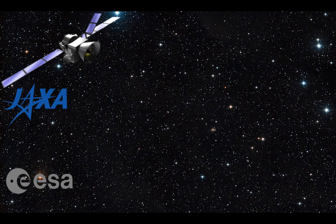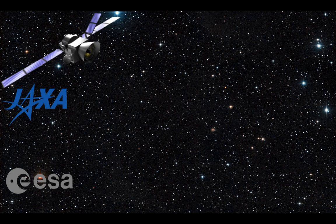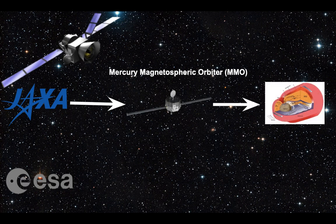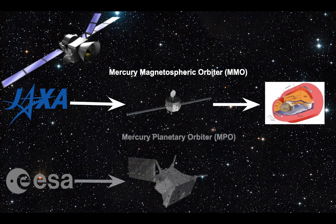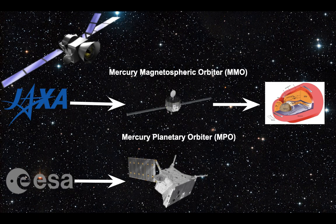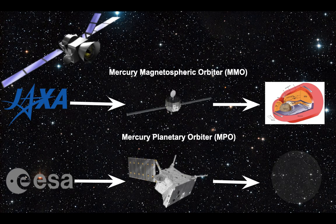This mission is a collaboration between JAXA and ESA and is composed of two spacecrafts, the Mercury Magnetospheric Orbiter from JAXA that has the objective of analyzing the Mercury Magnetosphere and the Mercury Planetary Orbiter, a spacecraft where BERM is installed.